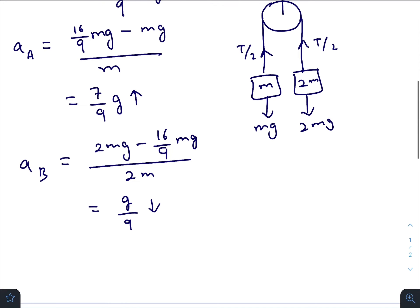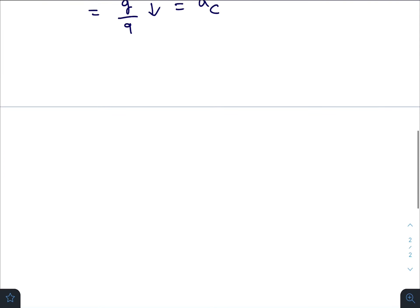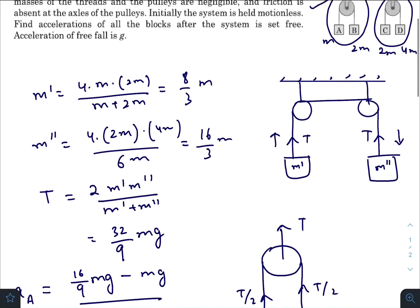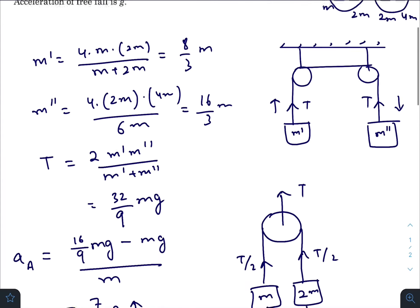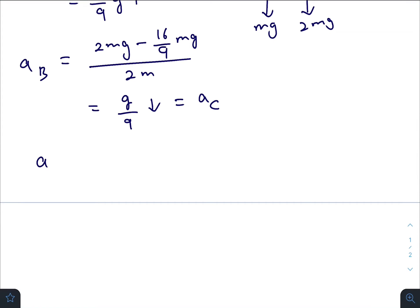downwards. Acceleration of C will be identical. And similarly for block D, it will be 4mg downwards minus 16 by 9mg upwards.